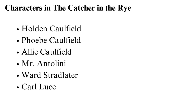Robert Ackley is a boring student at Pensy School, and his dormitory rooms connect with Holden's. He is socially disconnected and has a poor complexion. Holden suspects he doesn't brush his teeth. D.B. Caulfield is Holden's older brother and a war veteran. Currently, he is a screenwriter in Hollywood.